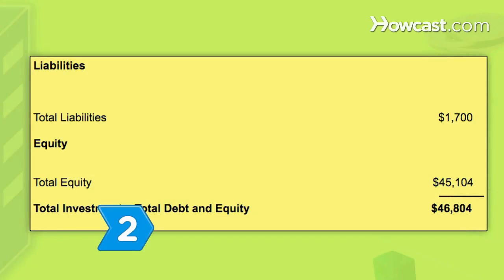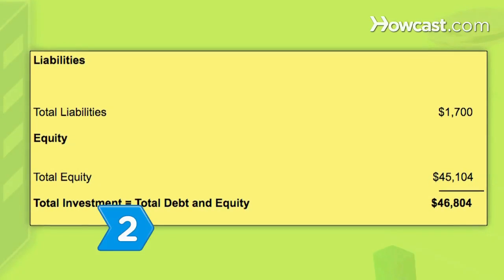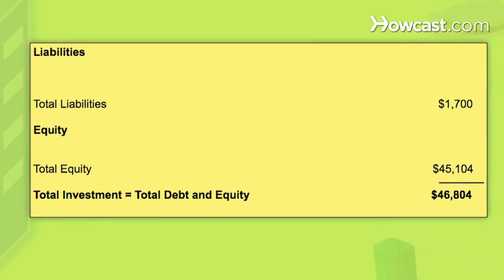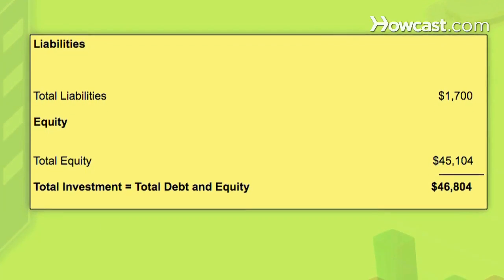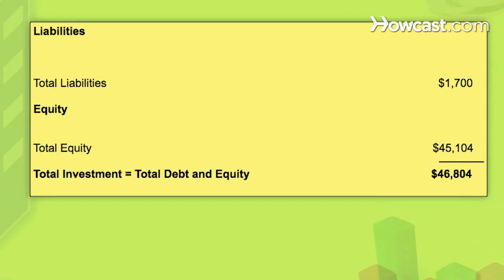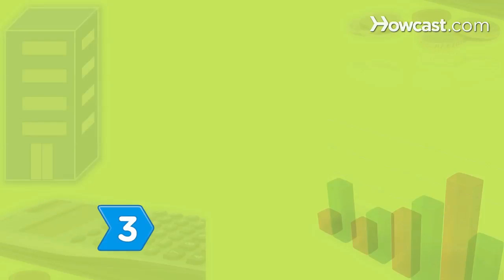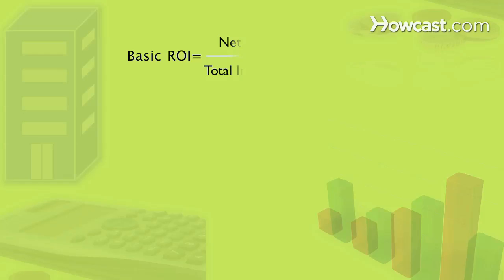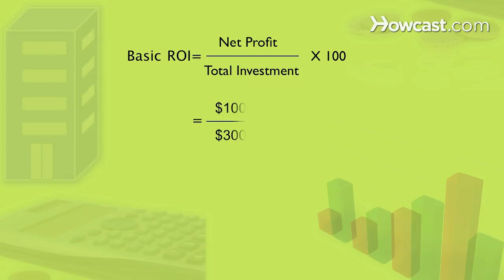Step 2: Calculate the total investment, which can be found by adding total debt to total equity. Step 3: Divide the net profit by the total investment and multiply by 100 to find the basic return on investment.